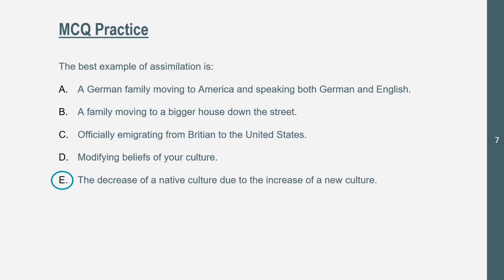We don't know the specifics. However, a lot of the other options are acculturation because they're not taking in the full culture. Option D — you're not taking in a full culture; you may be modifying beliefs of your culture, so you're staying in your culture. Option A — you're speaking both German and English, so you're having your own culture and your last culture, while taking standards of the new culture you're a part of.